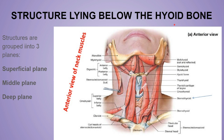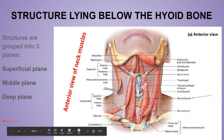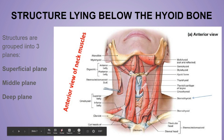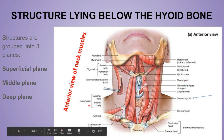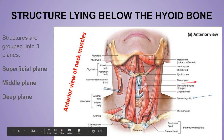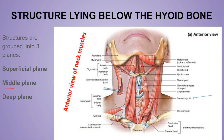Structures lying below the hyoid bone are divided into three planes: superficial, middle, and deep. The superficial plane contains the infrahyoid muscles. There are four infrahyoid muscles: the sternohyoid, the sternothyroid, the thyrohyoid, and the superior belly of the omohyoid.